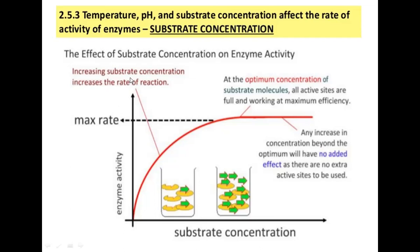From this graph we can conclude that as we gradually increase substrate concentration, the velocity of the reaction increases up to the maximum rate. After that, adding more substrate produces no change — the graphical pattern goes parallel to the x-axis. At this point, all active sites are engaged and no further reaction will occur.